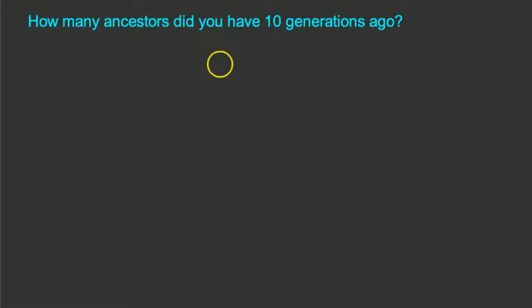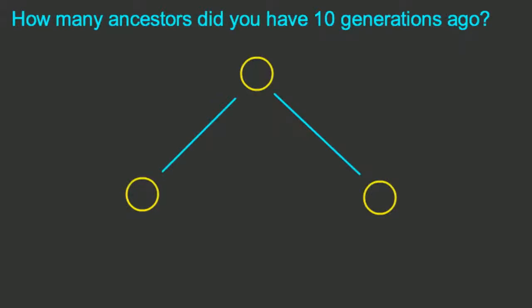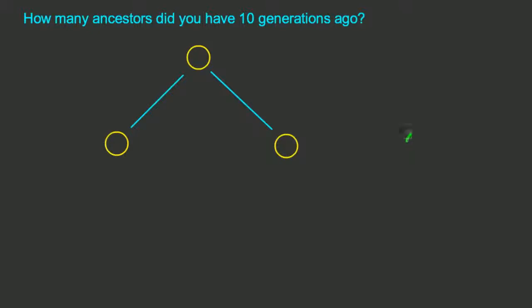The circle represents an individual—we could say me, for example. If I were to go back just one generation from where I currently am, I'd be talking about my mother and father, my two parents. So going back just a single generation, the answer to the question is very simple. I have two ancestors.